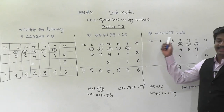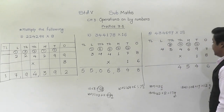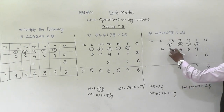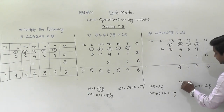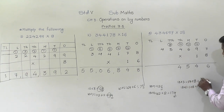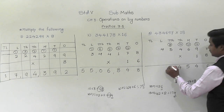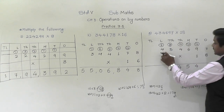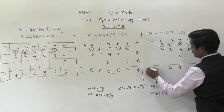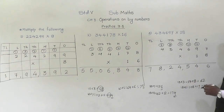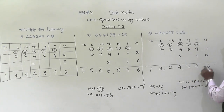18 threes are 54. 54 plus 8 is 62. So 2 will come down, 6 will be carried. Again 18 fours are 72. 72 plus 6 is 78. So the answer is 78,24,546.